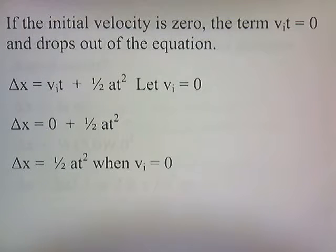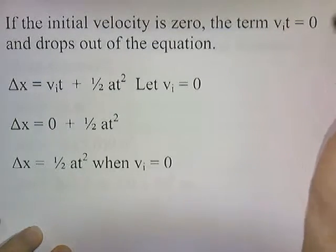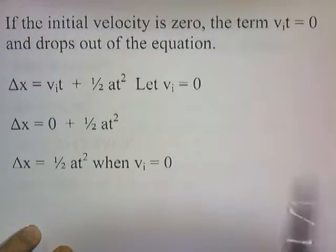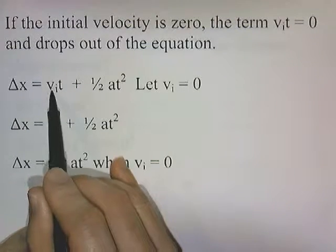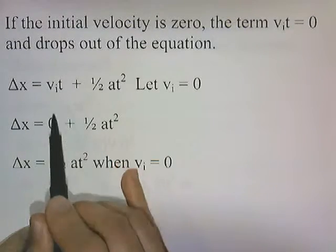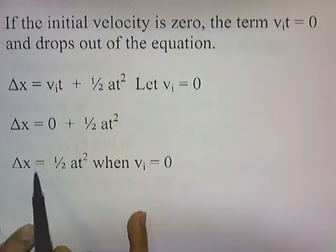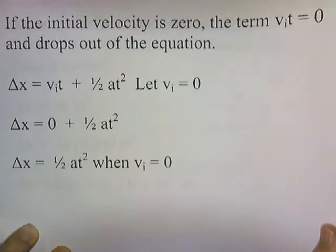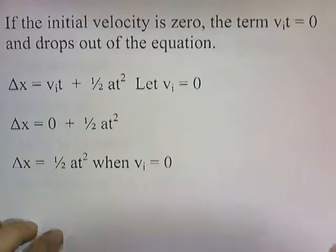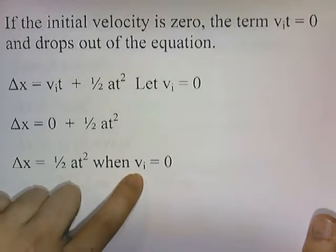Now, if the initial velocity is 0, the term vi*t is going to be equal to 0 and it drops out of the equation. So the formula becomes distance equals one-half at squared when the initial velocity is 0. We can use this simplified formula when the initial velocity is 0.